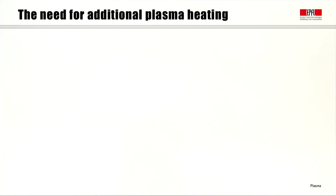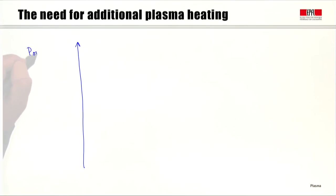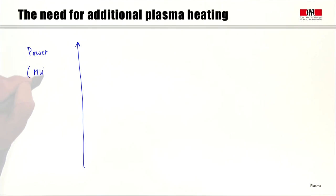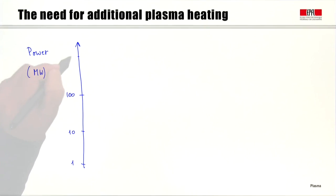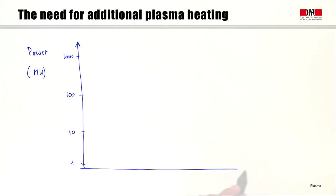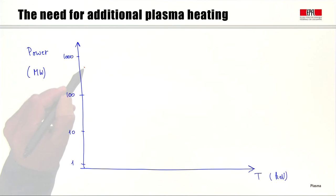We can therefore discuss why we need additional plasma heating. I'd like to illustrate that semi-quantitatively in a plot where I represent vertically the power corresponding to different channels in the plasma in megawatts, on a logarithmic scale of 1, 10, 100, and 1000 MW, as a function of the temperature in kilo-electron-volts, also on a logarithmic scale. The ohmic heating goes down with T^(3.5), taking a steeply falling curve of this kind.